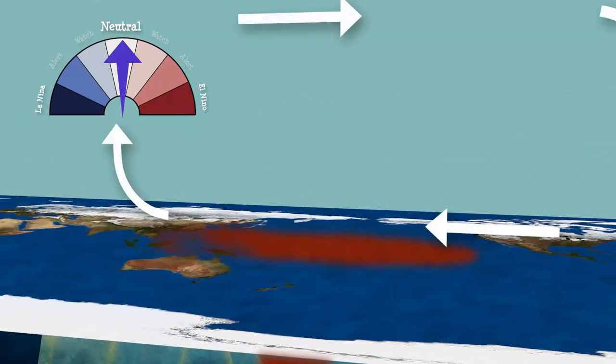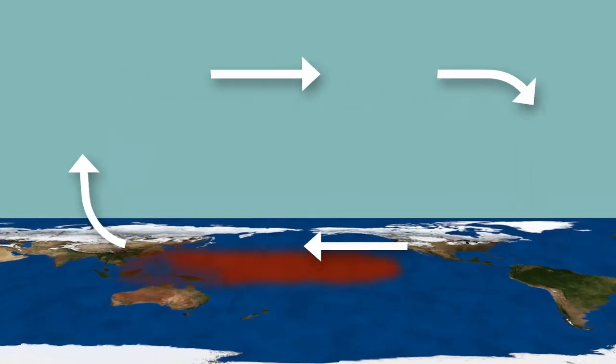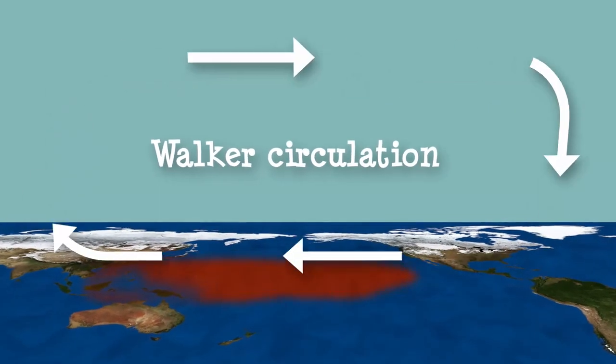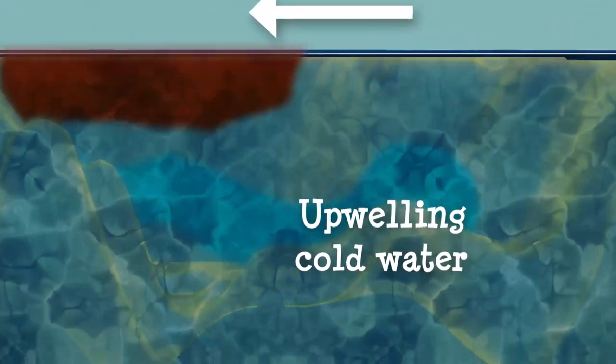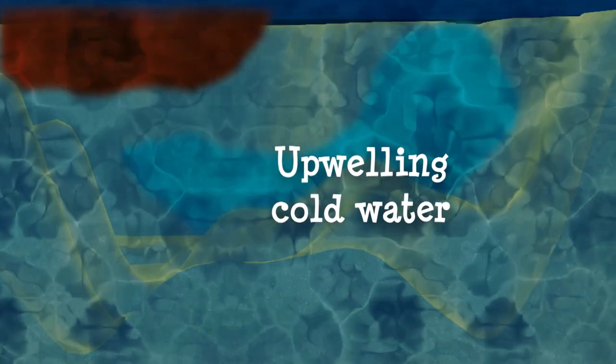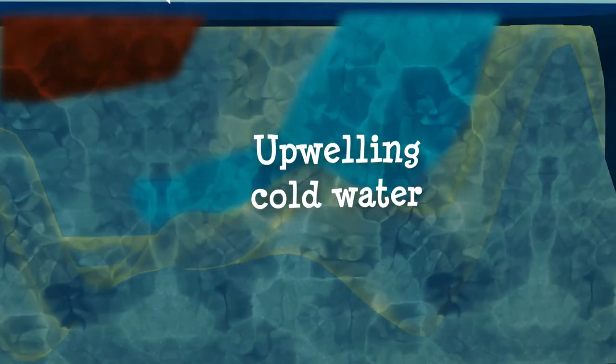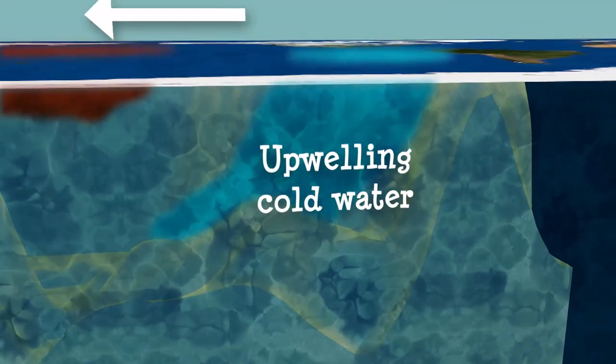Above the ocean, warm air rises, driving atmospheric circulation patterns known as Walker circulation. Cold, nutrient-rich waters upwell in the coastal ocean, replacing the warm water pushed away by the trade winds.